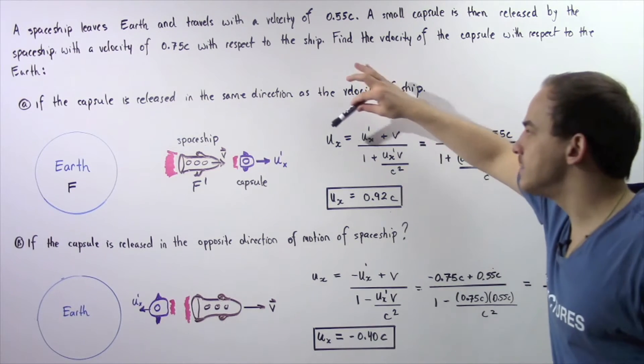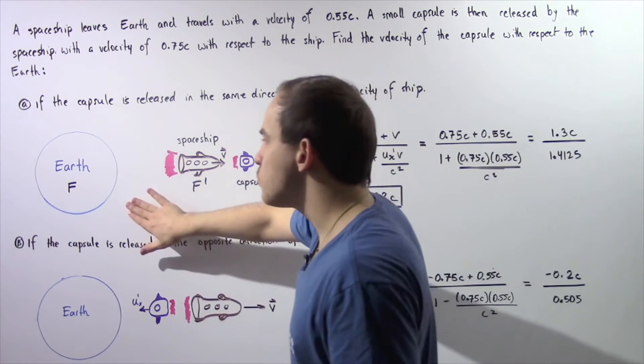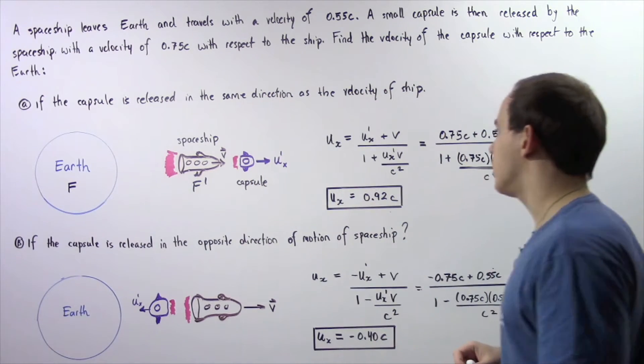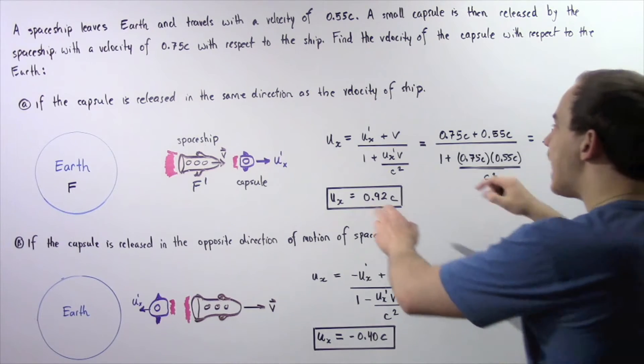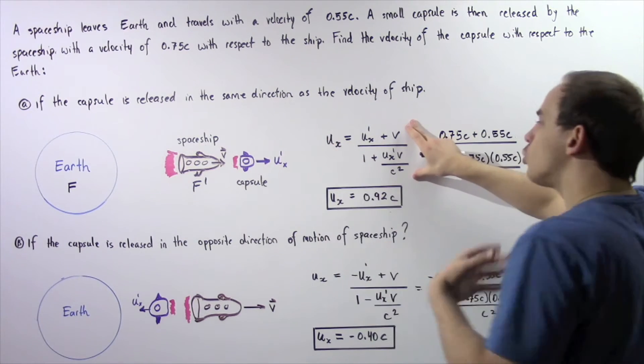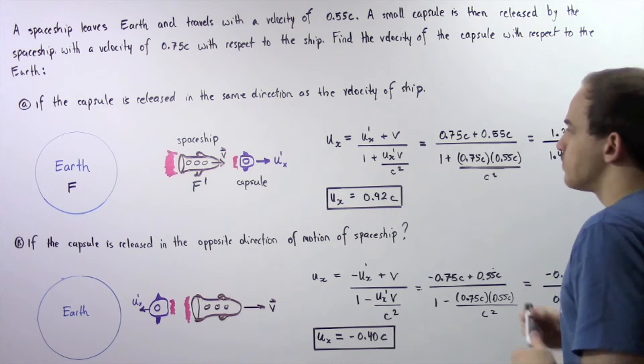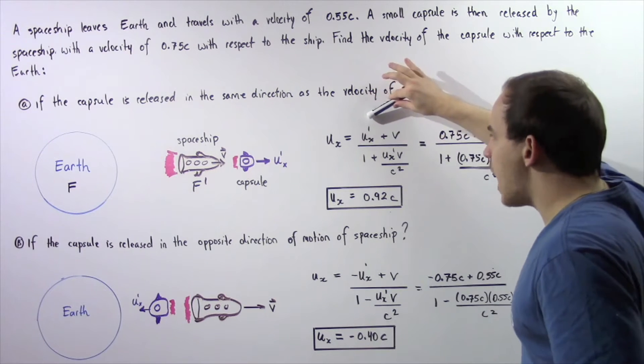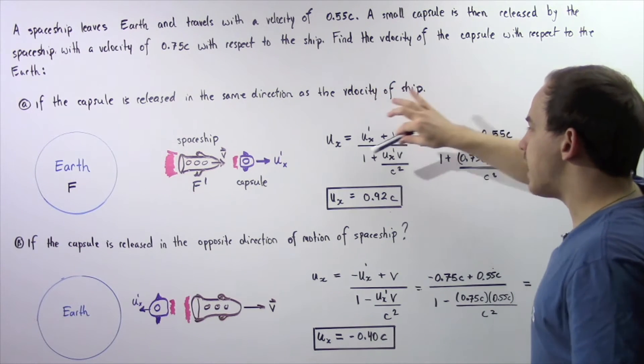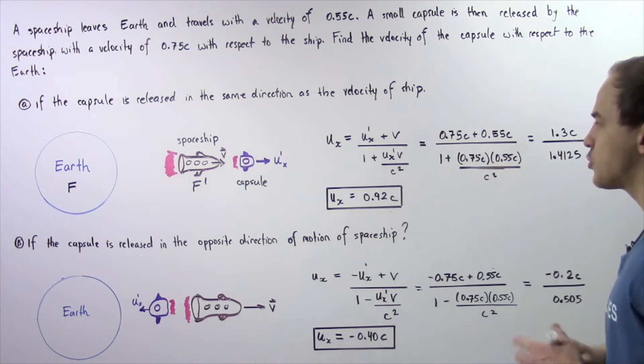What we want to calculate is U_x, the velocity of that capsule with respect to the stationary Earth, with respect to frame F. And we want to calculate it by using the Lorentz velocity transformation equation given by this formula. U_x is equal to U'x plus V divided by 1 plus U'x times V divided by C squared.